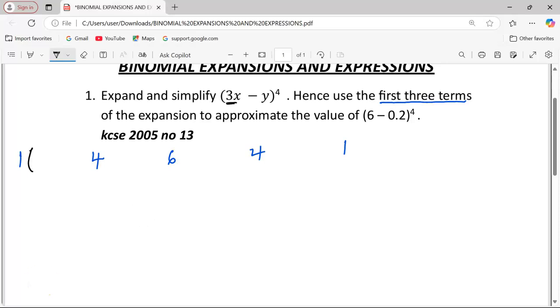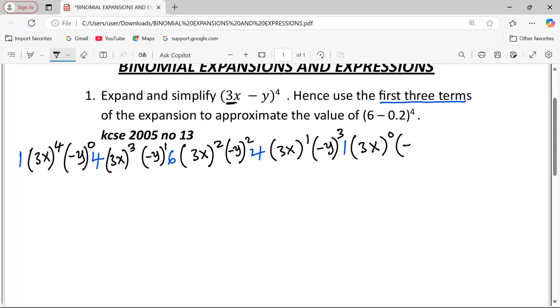So, the first one, which is 3x, will be raised to power 4. In the next term, 3x will go down to the power of 3, so that negative y assumes power 1. As we proceed, 3x becomes squared, so that negative y also takes power 2. Then 3x goes to power 1, as negative y becomes cubed. And finally, 3x takes 0, as negative y assumes power 4.